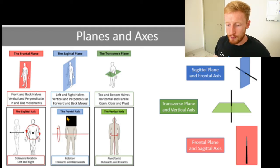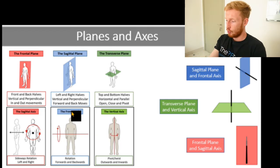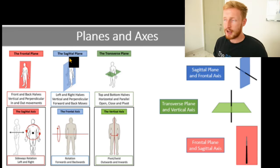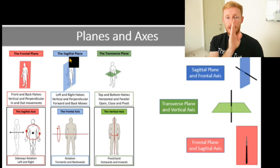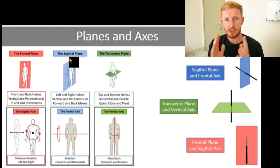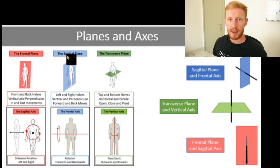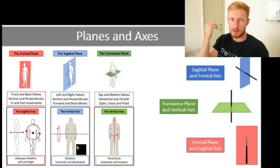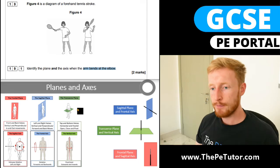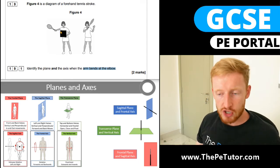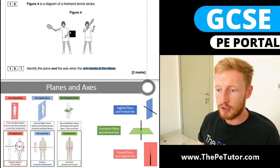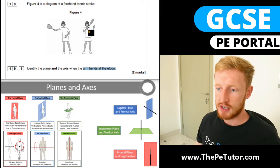We know that we're dealing with the frontal axis — because we've got that forwards and backwards rotation at flexion at the elbow — and it's the sagittal plane, because that splits our body or limb down the midline into our left and right hand sides. So the sagittal plane — S for sides — and the frontal axis for forwards and backwards: those two together allow for flexion at the elbow from the preparation to the execution phase of a tennis forehand.